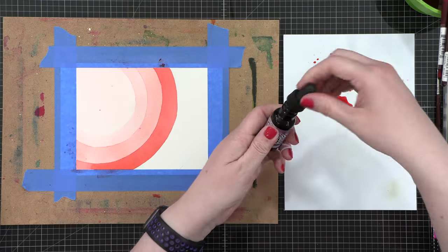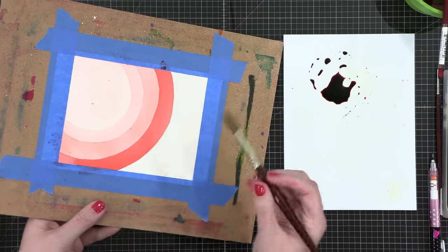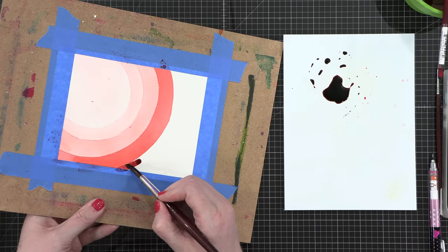And then I started to mix it with some Seedless Preserves. This is going to start transitioning the color to a deeper shade.